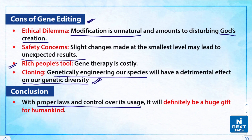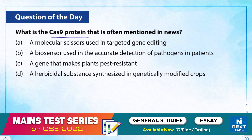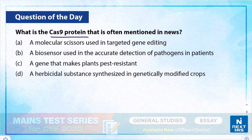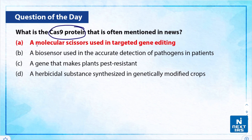It will be a huge gift for mankind if used with proper laws and control over its usage. Now let us take up a practice question: What is the Cas9 protein often mentioned in the news? A) It is a molecular scissors used in targeted gene editing. B) It is a biosensor used in the accurate detection of pathogens. C) A gene that makes plants pest resistant. D) It is a herbicidal substance synthesized in genetically modified crops.